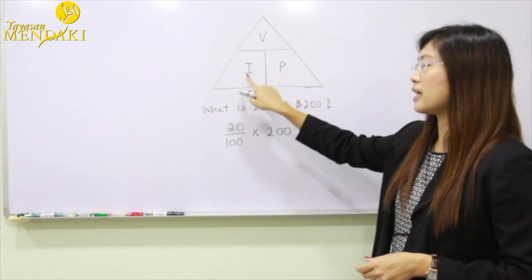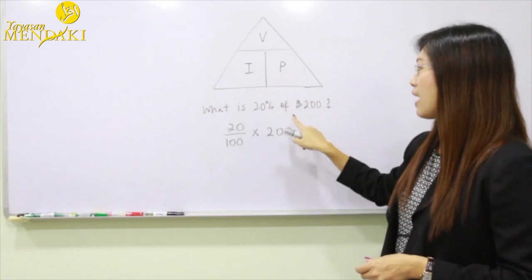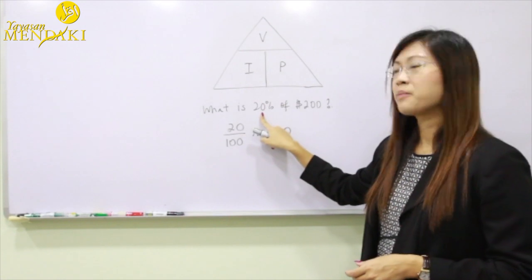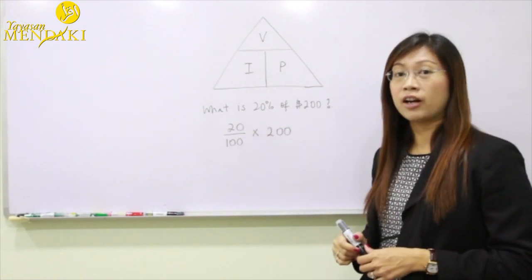To find the value we're going to take the initial and multiply by the percentage. We have $200 which is the initial and the percentage is 20%. Now we're going to change this 20% to a fraction which is 20 out of 100.